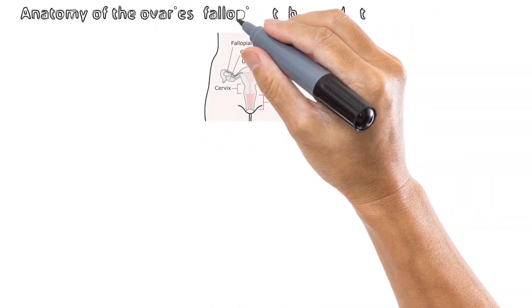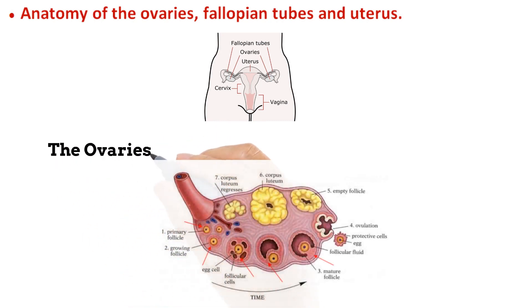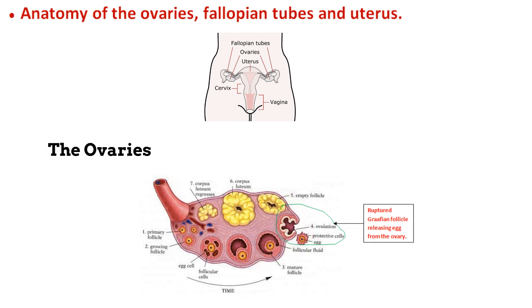To better understand hysterosalpingography, let us look at the anatomy of the female reproductive system. There are normally two ovaries, one on each side of the body. We are interested in the internal cortex, which contains many tiny seed-like structures called ovarian follicles, indicated by the red arrows. The yellow structure within each follicle is an ovum or egg. These follicles develop into a Graafian follicle, circled in yellow — a mature follicle that eventually ruptures at the surface of the ovary, releasing the ovum. This release is called ovulation and occurs once in every menstrual cycle.